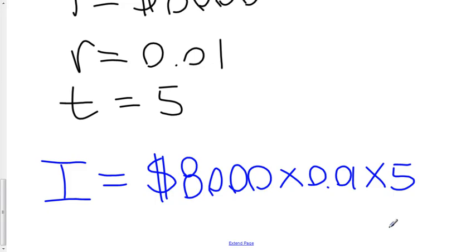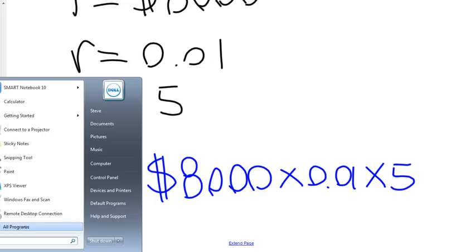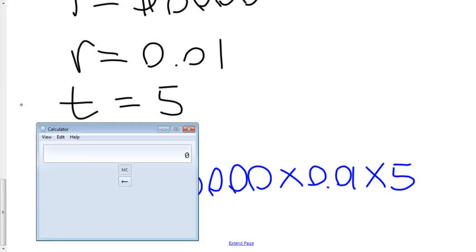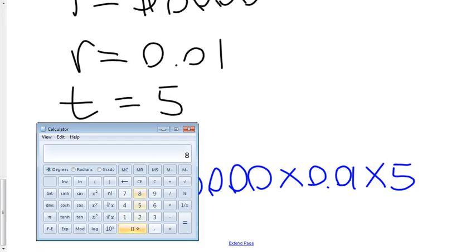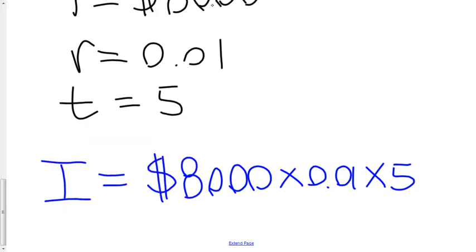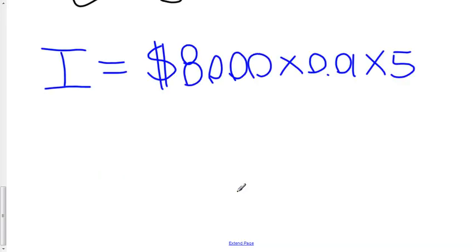Let's pull out a calculator. 8,000 times 0.01 times 5. And I get 400. So I is equal to 400.